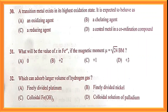Question number thirty: a transition metal in its highest oxidation state is expected to behave as an oxidising agent. Question number thirty-one: find the value of x in Ye^x+ if the magnetic moment μ equals √24 Bohr magnetons.